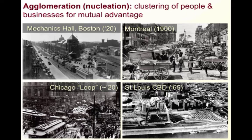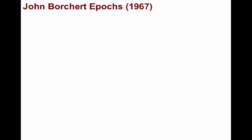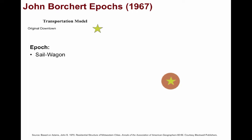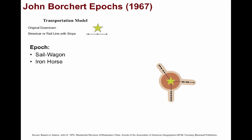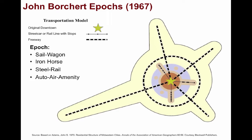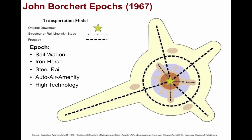You can see some of the early CBDs of cities such as Montreal, Boston, Chicago, and St. Louis. We're primarily going to be looking at the Borchert Model, developed by a University of Minnesota professor back in 1967. He analyzed urbanization in North America and categorized five distinct epochs based on the impact of a particular transport technology, which increased the rates of growth and complexity of the urban landscape over time.